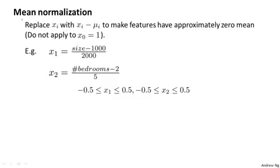In addition to dividing by the maximum value, when performing feature scaling, sometimes people will also do what's called mean normalization. And what I mean by that is that you might take a feature xi and replace it with xi minus μi to make your features have approximately 0 mean. And obviously we won't apply this to the feature x0, because the feature x0 is always equal to 1, so it cannot have an average value of 0.